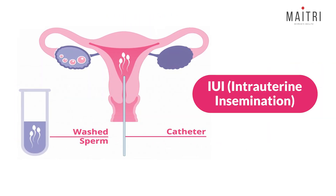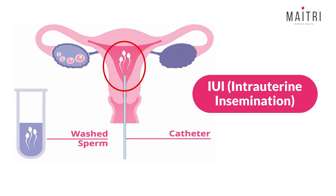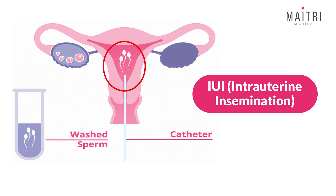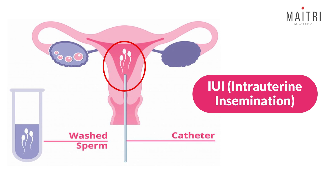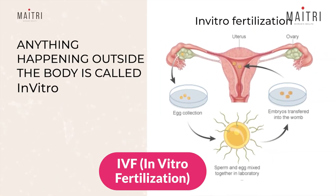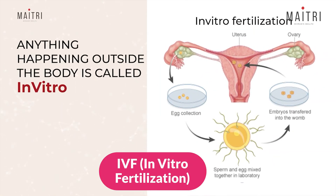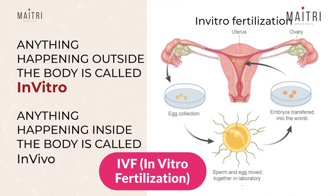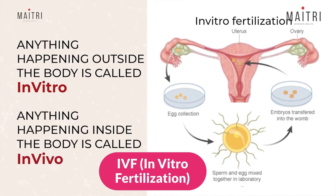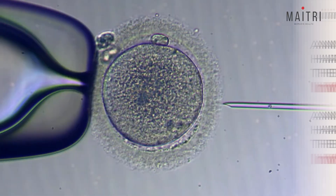IUI, intrauterine insemination: sperms are washed and placed directly into the uterus during ovulation to increase chances of pregnancy. IVF, in vitro fertilization: eggs are retrieved from the ovaries, fertilized with sperm in a lab, and the fertilized egg or embryo is then transferred back to the uterus.